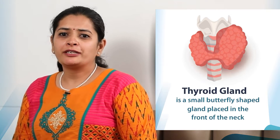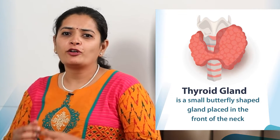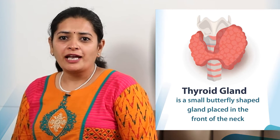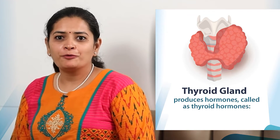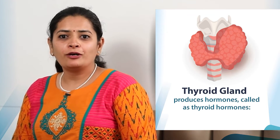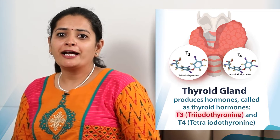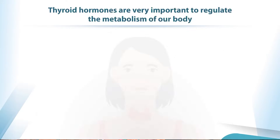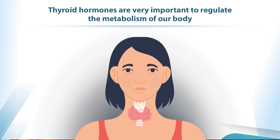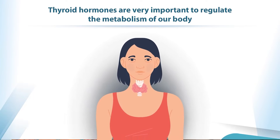Thyroid gland is a small butterfly-shaped gland in front of our neck and it produces, as the name goes, thyroid hormones which are called T3 and T4 — triiodothyronine and tetraiodothyronine.